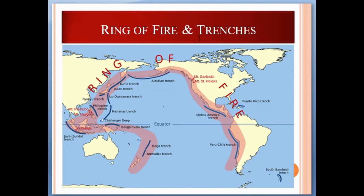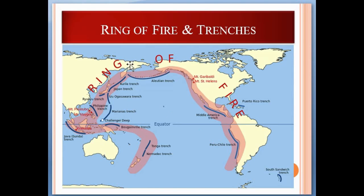The Ring of Fire and trenches: the Ring of Fire is the most active volcanic zone in the world. As you can see here, the Peru-Chile Trench, the Middle American Trench, the Aleutian Trench, and the Mariana Trench are all visible. All of the biggest and largest trenches are located around the Ring of Fire.